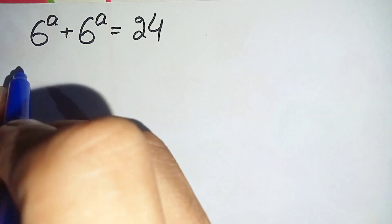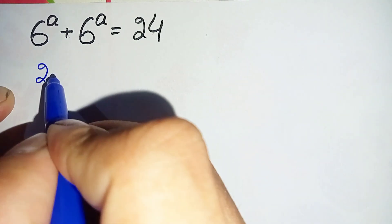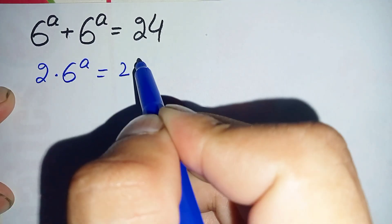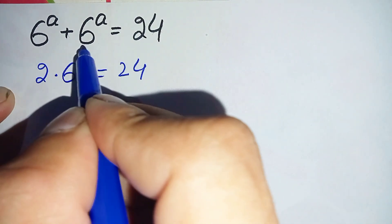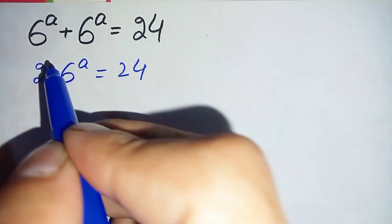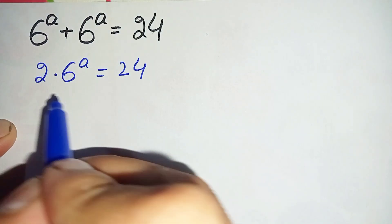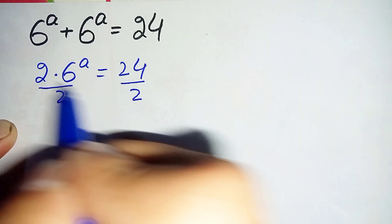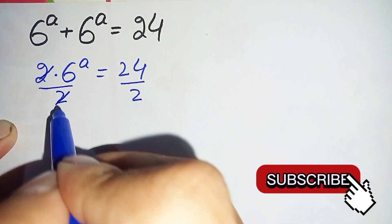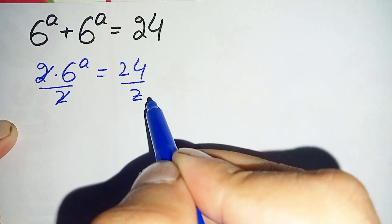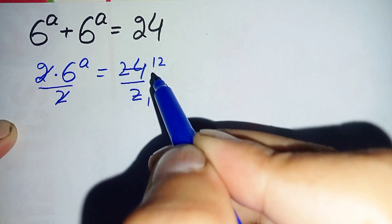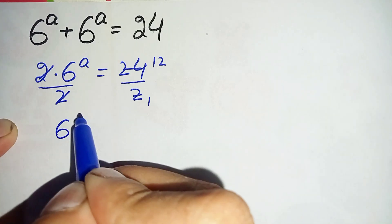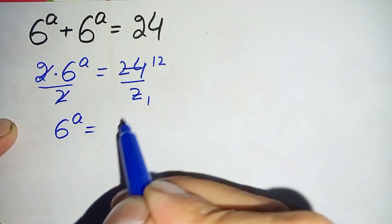We can write it as 2 times 6 raised to power a is equal to 24. Now let us divide both sides by 2 to eliminate the 2 from the left hand side. These two will be cancelled, and 24 divided by 2 is 12, so this becomes 6 raised to power a is equal to 12.